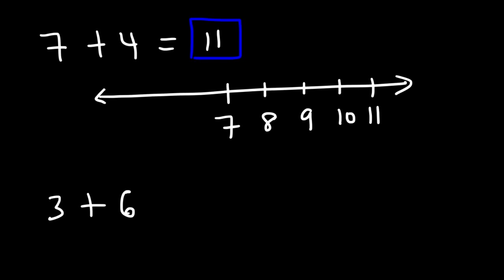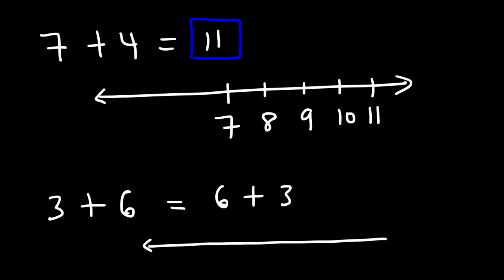Now 3 plus 6 — this is the same as 6 plus 3. I think it's easier if you start with 6 and then travel 3 spaces to the right instead of starting with 3 and traveling 6 spaces. So: 1, 2, 3. So 6 plus 3, or 3 plus 6, they're both equal to 9.